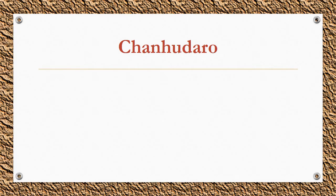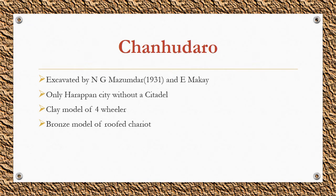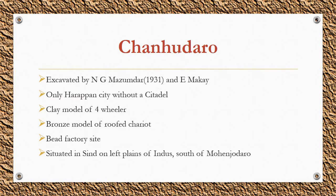Chanhu-daro was excavated by N.G. Majumdar in 1931 and E. McKay later. It was the only Harappan city without a citadel. A clay model of a four-wheeler and a bronze model of a roofed chariot were found. It was a bead factory site, as lots of beads, seals, and ornaments were unearthed. It is situated in Sindh on the left plains of the Indus, south of Mohenjo-daro.